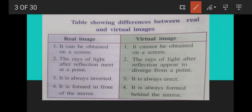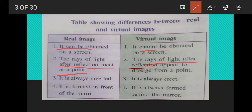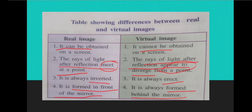A real image can be obtained on a screen, but a virtual image cannot be obtained on a screen. In a real image, rays of light after reflection actually meet at a point, forming the real image. For a virtual image, the rays of light after reflection appear to diverge from a point. A real image is always inverted, while a virtual image is always erect. A real image is formed in front of the mirror, whereas a virtual image is formed behind the mirror.